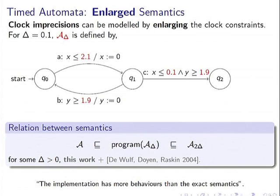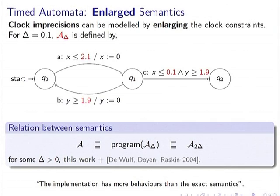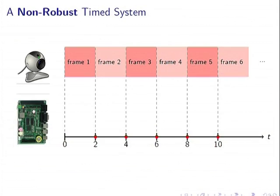This is another way to model these imprecisions, and there is a relation between the two semantics. For any timed automaton A, all behaviors of A are included in the program semantics when you enlarge by delta. This inclusion is actually a timed simulation — not just trace inclusion. If you enlarge the guards even more, the program semantics is included in the enlarged automaton. So the real-world behavior can have extra, additional behavior compared to the abstract model A.